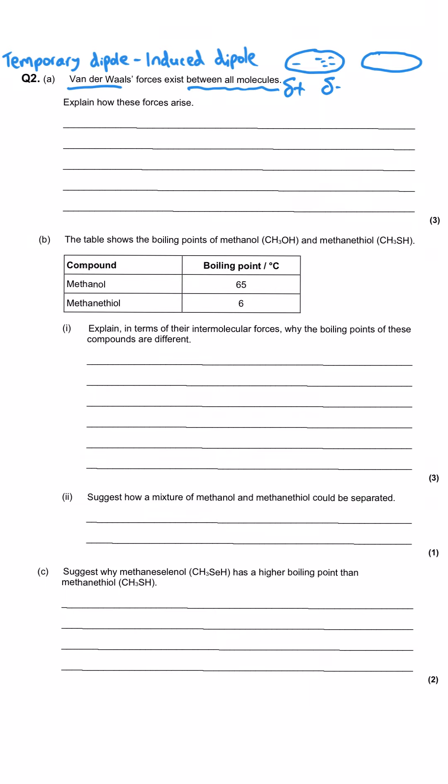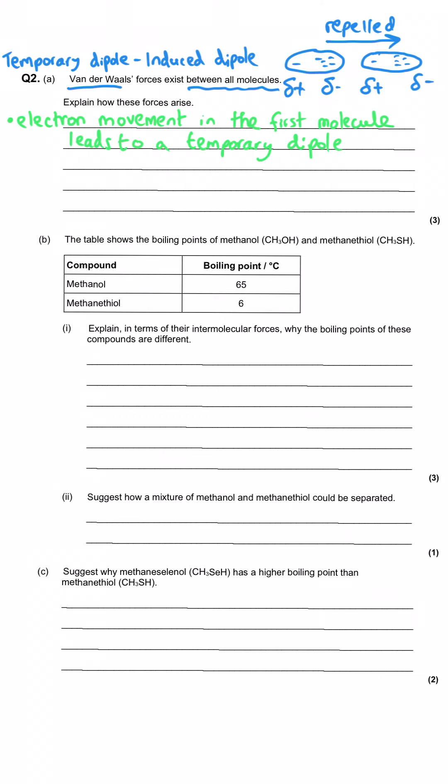What that does is cause the electrons in a neighbouring molecule to move in a particular way — induction means to cause to happen. As I've drawn it, the electrons in the left-hand molecule repel the electrons in the right-hand molecule, so we end up with more electrons on the right-hand side of the second molecule as well. That is the induction — the repulsion of these electrons. It can work the other way around too.